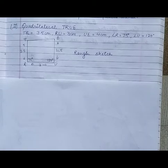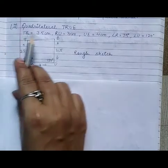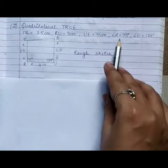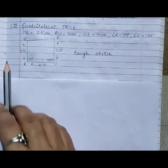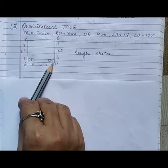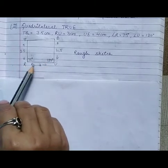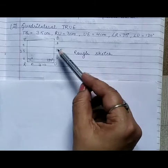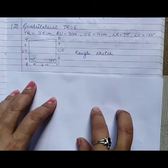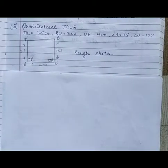Now the next one, quadrilateral TRUE. TR is given 3.5 cm, RU is given 3 cm, UE is given 4 cm, angle R is 75 degrees, angle U is 120 degrees. This is the rough sketch, so here I'm going to draw fair.